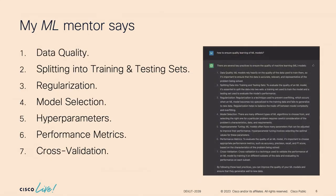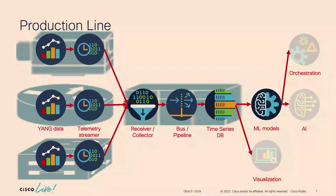In order to validate my work, I asked my mentor — ChatGPT, which is a machine learning model itself — what makes it consistent in its performance. The answers were pretty much similar to what I had in mind years ago: data quality, splitting data between training and testing, regularization, model selection, hyperparameter tuning, performance metrics monitoring, and cross-validation. So I turned out to be right, but three years ahead of my friend and mentor.